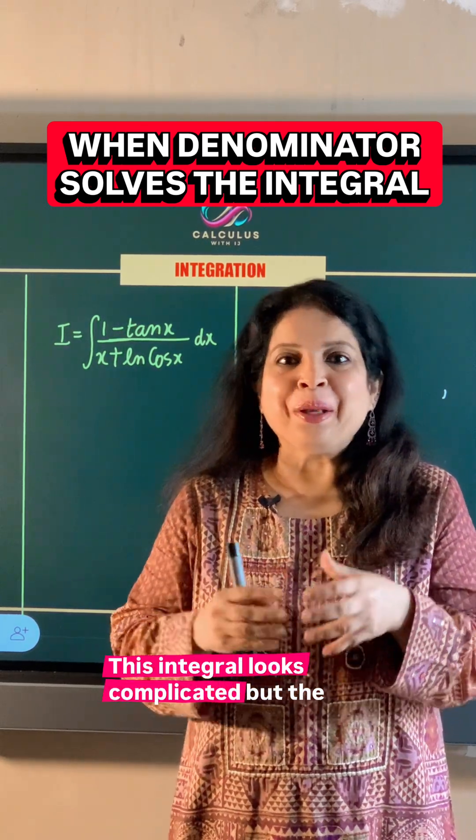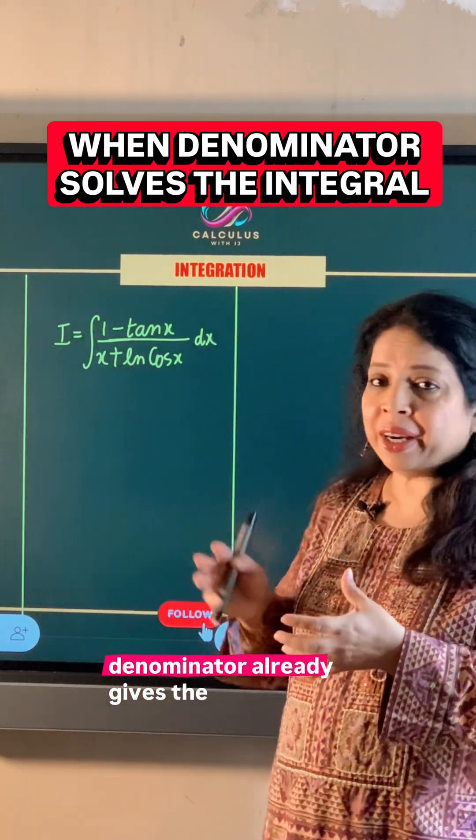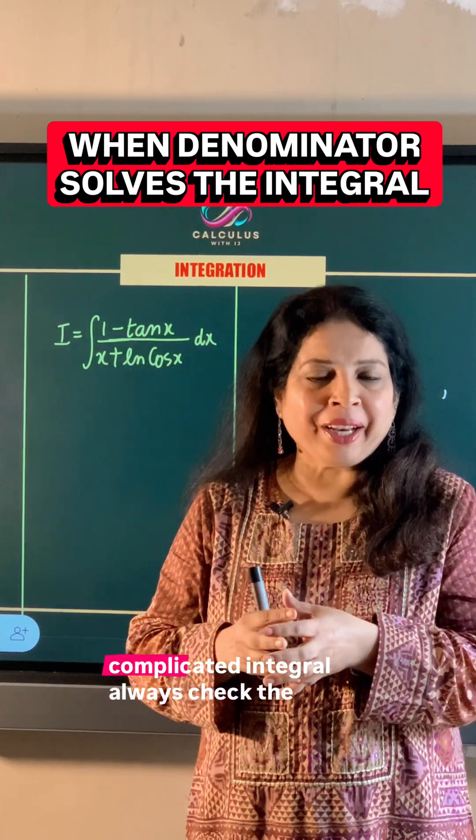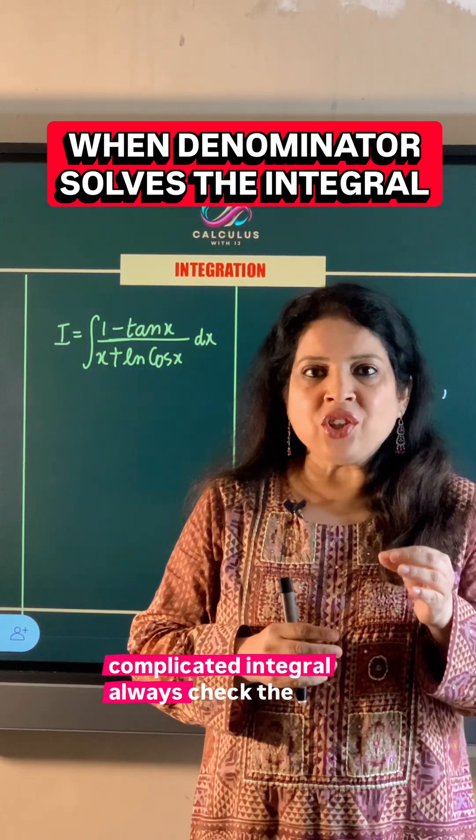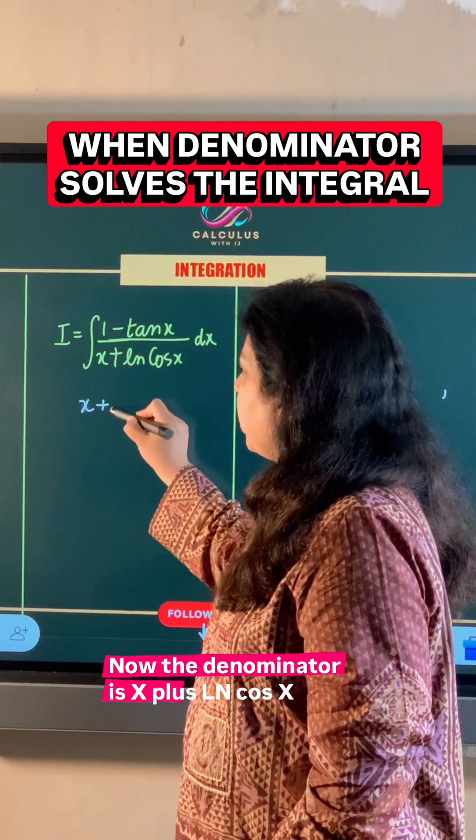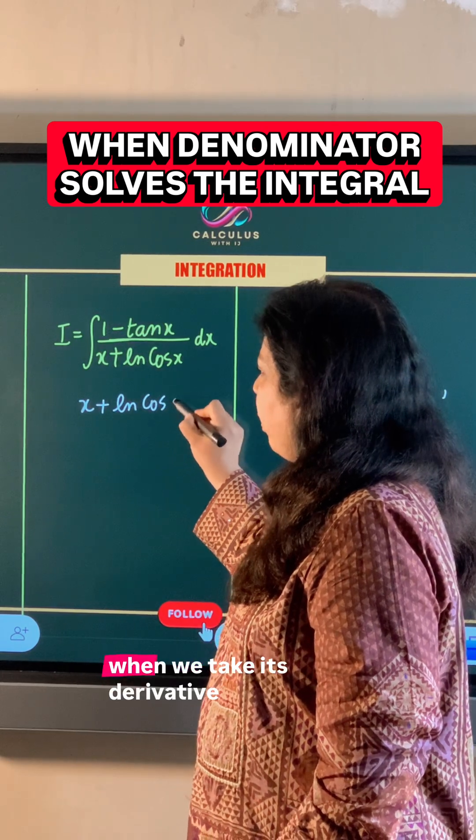This integral looks complicated, but the denominator already gives the answer. Whenever you come across such a complicated integral, always check the derivative of the denominator first. Now the denominator is x plus ln cos x. When we take its derivative...